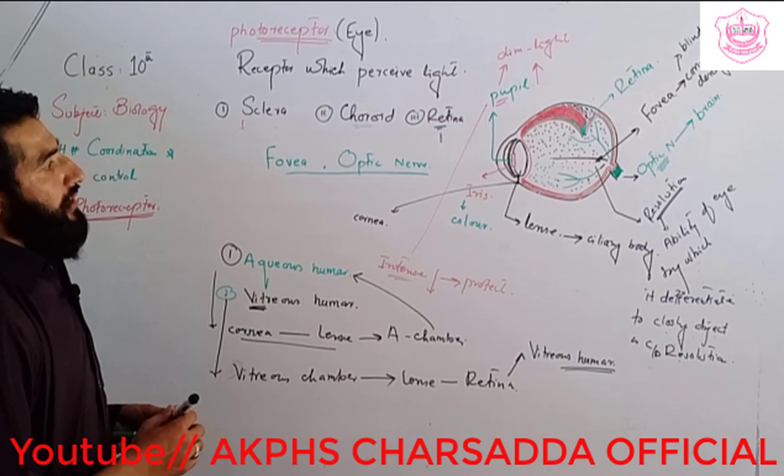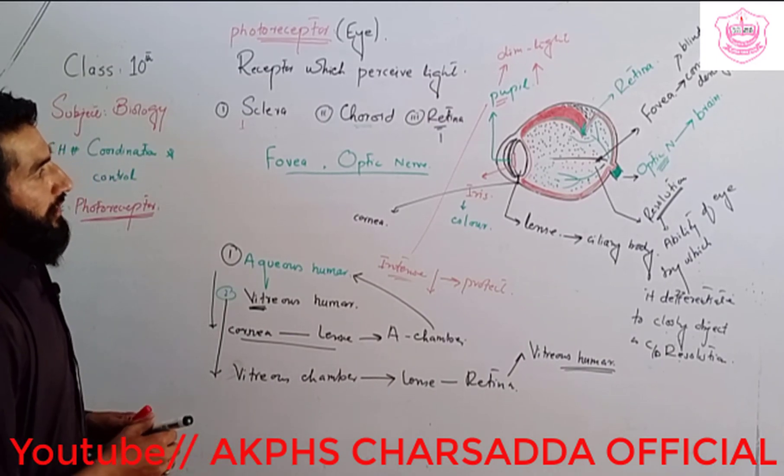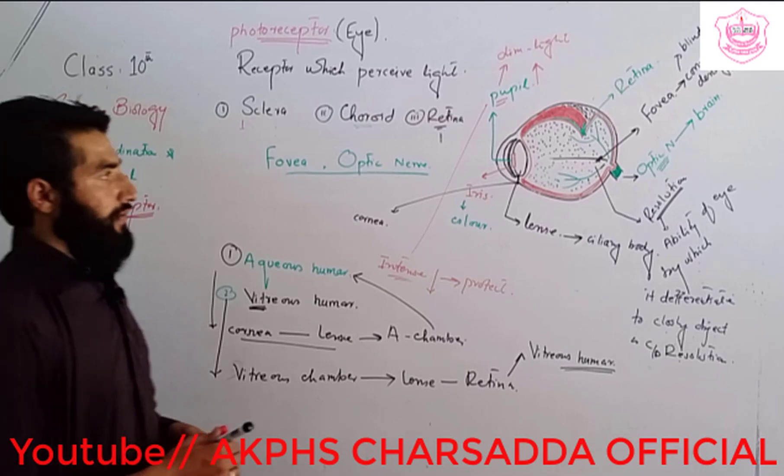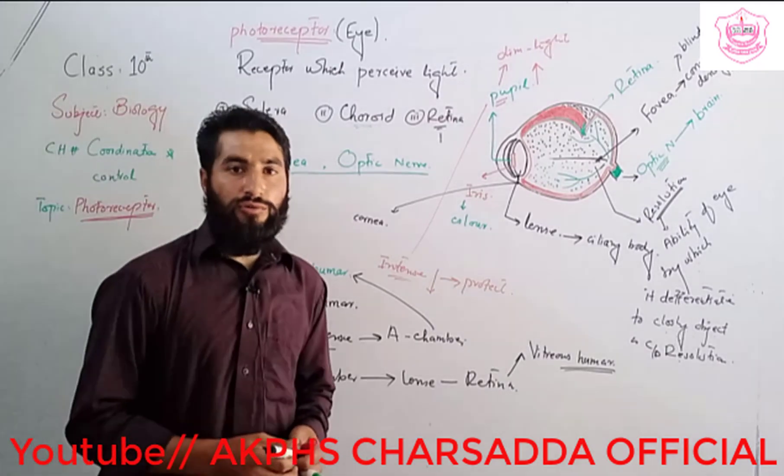This was all about the structure of the human eye. In the next class, we will discuss the next topic. Thank you.